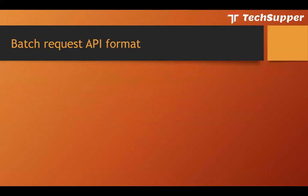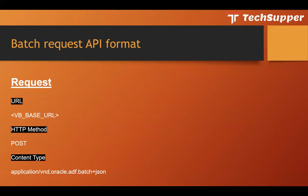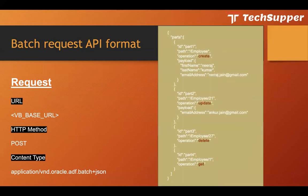Now, how do you form your batch request? If you test it in Postman, the URL will be the VB base URL, the method is POST, and the content type you need to set is 'application/vnd.oracle.adf.batch+json'. The body you need to pass contains 'parts', where each part has a unique ID — it can be anything like 'part1'.